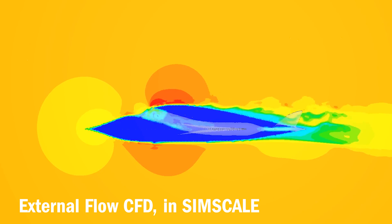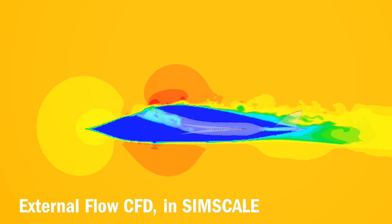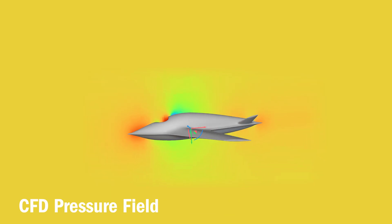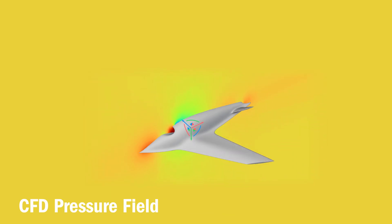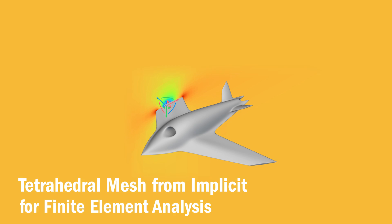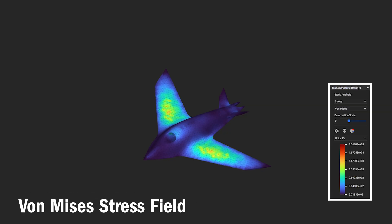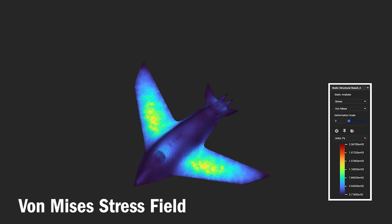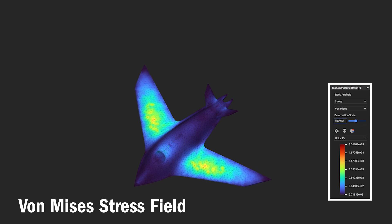An external flow analysis is run in SimScale in order to calculate the loads on the entire structure. The resulting pressure data is imported back into NTOP, wired up to run a stress simulation on the airframe in order to better understand the fitness of this design point.